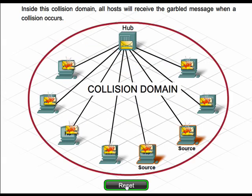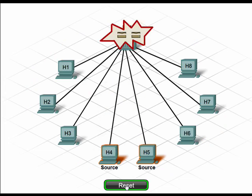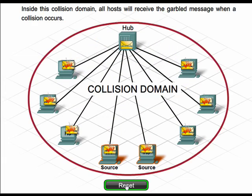If two devices try to use the network simultaneously, as seen in this animation, a collision occurs. When a collision occurs, messages become garbled or unreadable, and the network must reset itself before data delivery can again be attempted. The area of the network where a host can receive the garbled message resulting from a collision is called a collision domain.